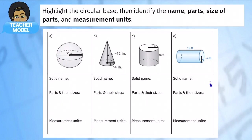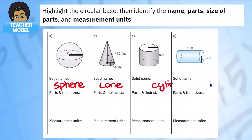In our last lesson we talked about rectangles and cubes. In this lesson we're going to look at solid figures with a circular base. There are three different kinds we'll look at: the sphere, the cone, and cylinders.